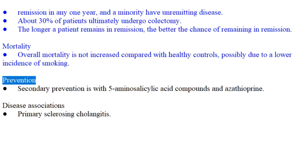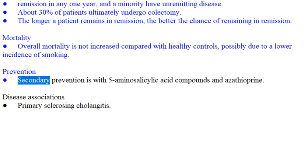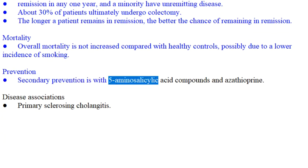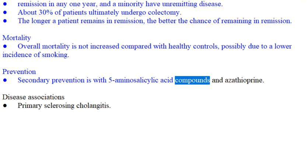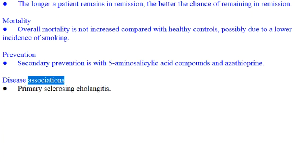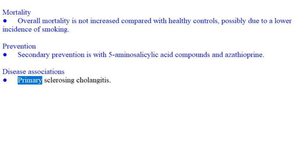Prevention: Secondary prevention is with 5-aminosalicylic acid compounds and azathioprine. Disease associations include primary sclerosing cholangitis.